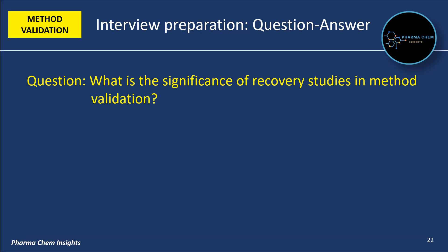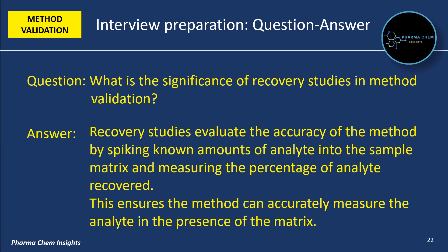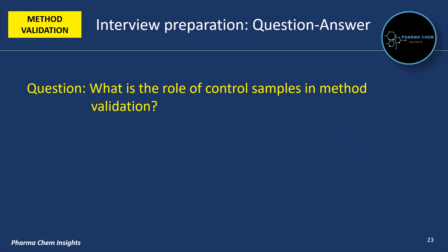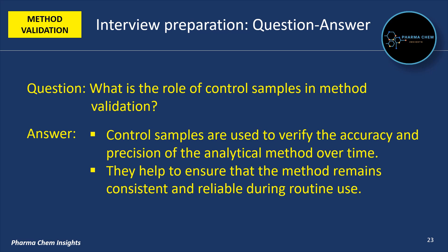Next question: what is the significance of recovery studies in method validation? Recovery studies evaluate the accuracy of the method by spiking known amounts of analyte into the sample matrix and measuring the percentage of analyte recovered. This ensures the method can accurately measure the analyte in the presence of the matrix. Next: what is the role of control samples in method validation? Control samples are used to verify the accuracy and precision of the analytical method over time, helping to ensure that the method remains consistent and reliable during routine use.